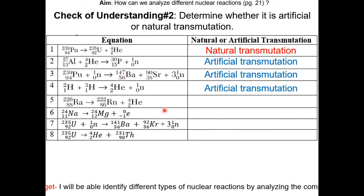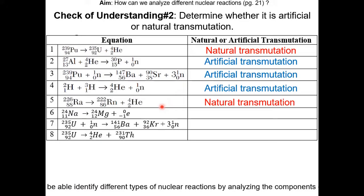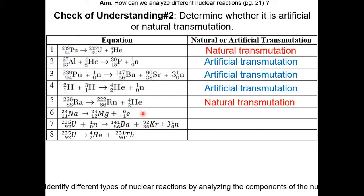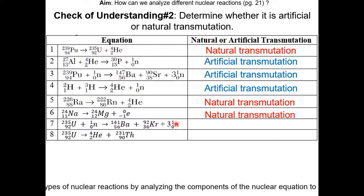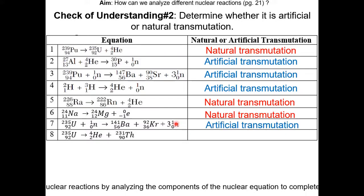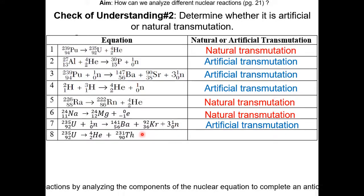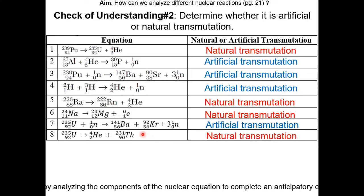The fifth one has one reactant, so it's natural. The sixth one has one, therefore it is also natural. The seventh one has two reactants, therefore it is artificial. And the last one has one reactant, therefore it is natural.